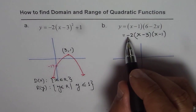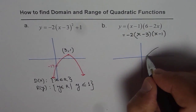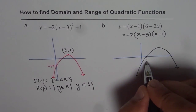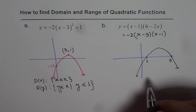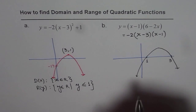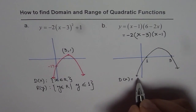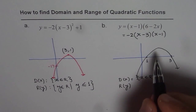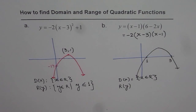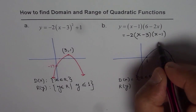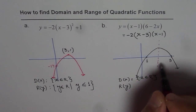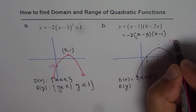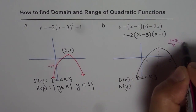The parabola opens downwards again. We can sketch it with x-intercepts at 1 and 3. The domain is x belongs to real numbers. For the range, we need to find the vertex, which lies on the axis of symmetry — halfway between the two x-intercepts. We add 1 and 3 and divide by 2, giving 4 divided by 2, which equals 2. So the x-value of the vertex is 2.